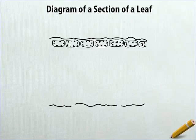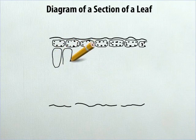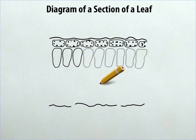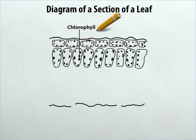Now below these structures, draw some long irregular structures separated from one another and arranged horizontally. Inside each structure, draw some thick dots and label any one of them as chlorophyll.